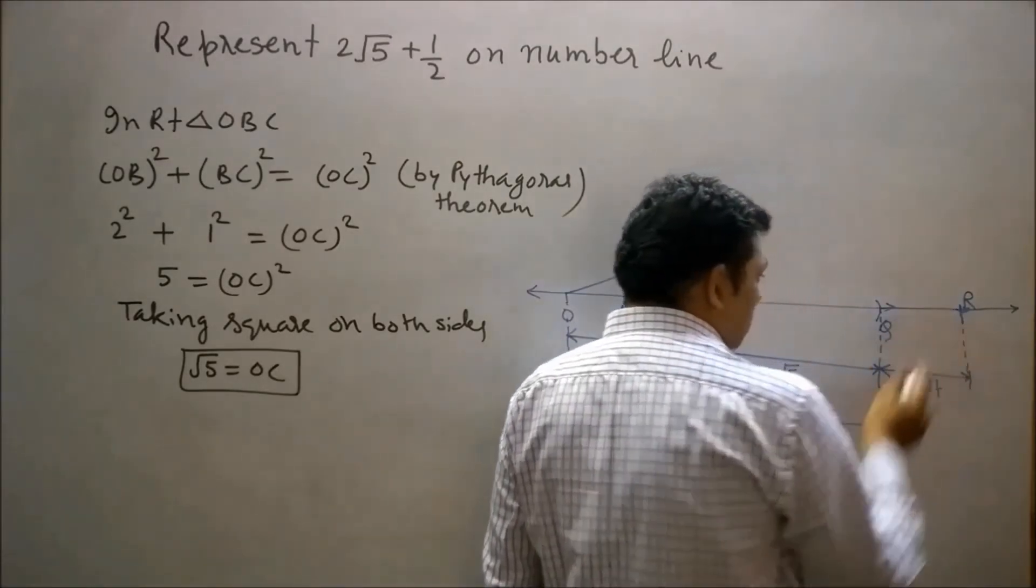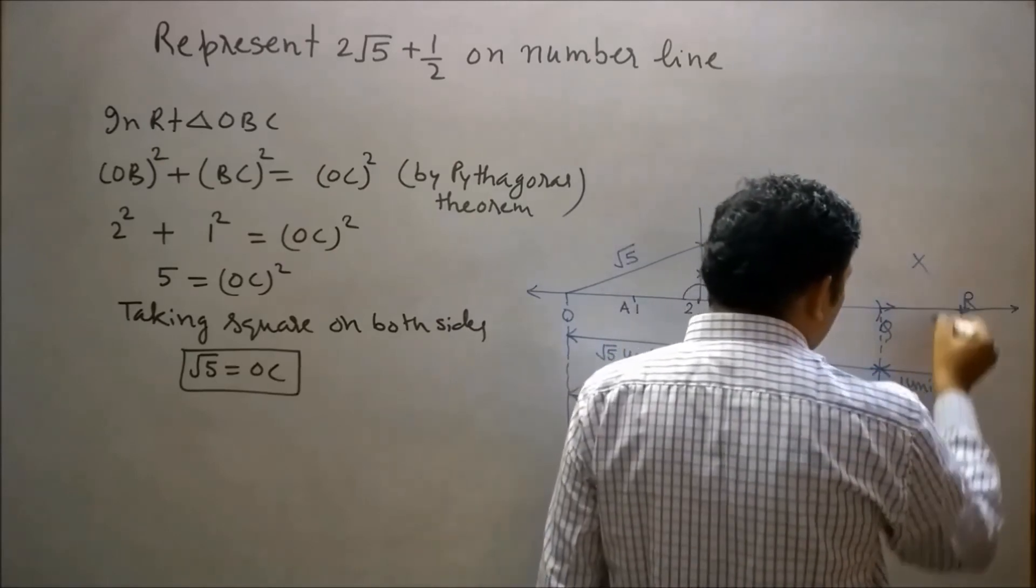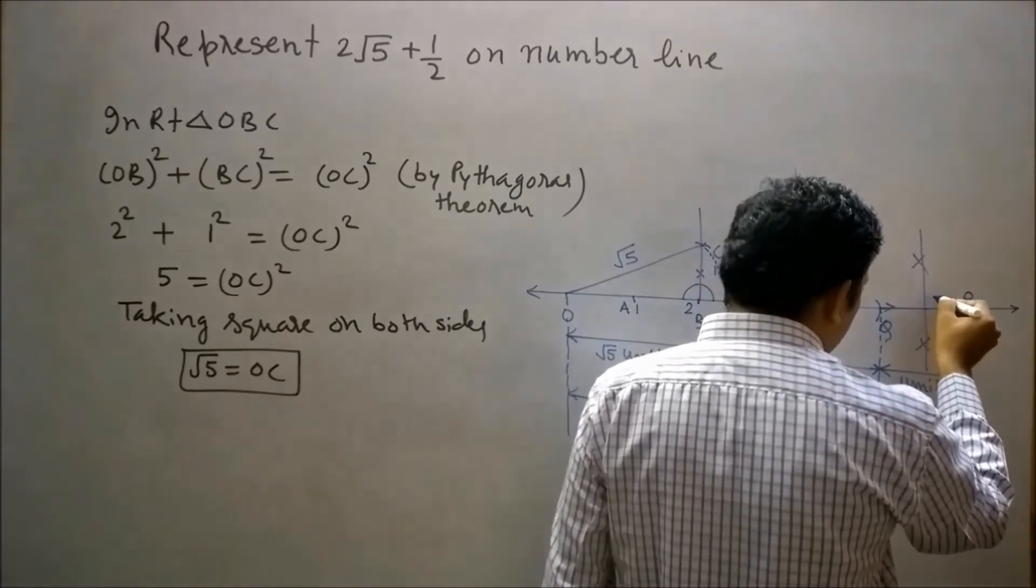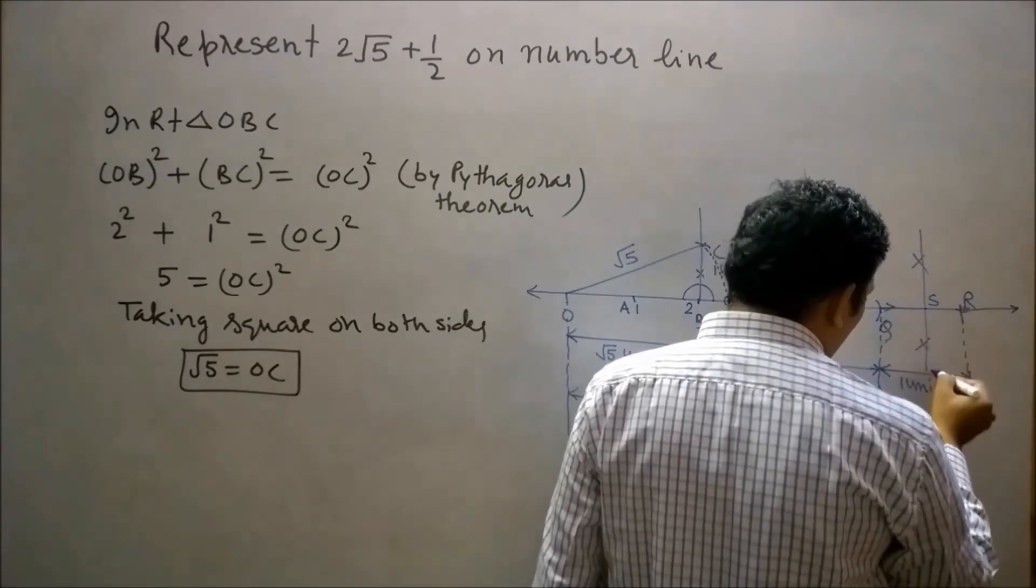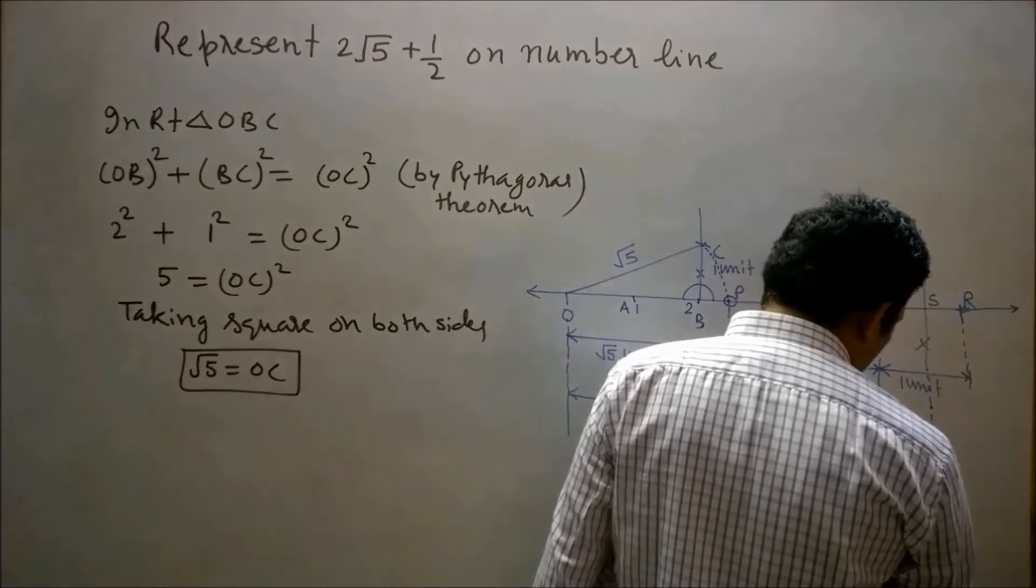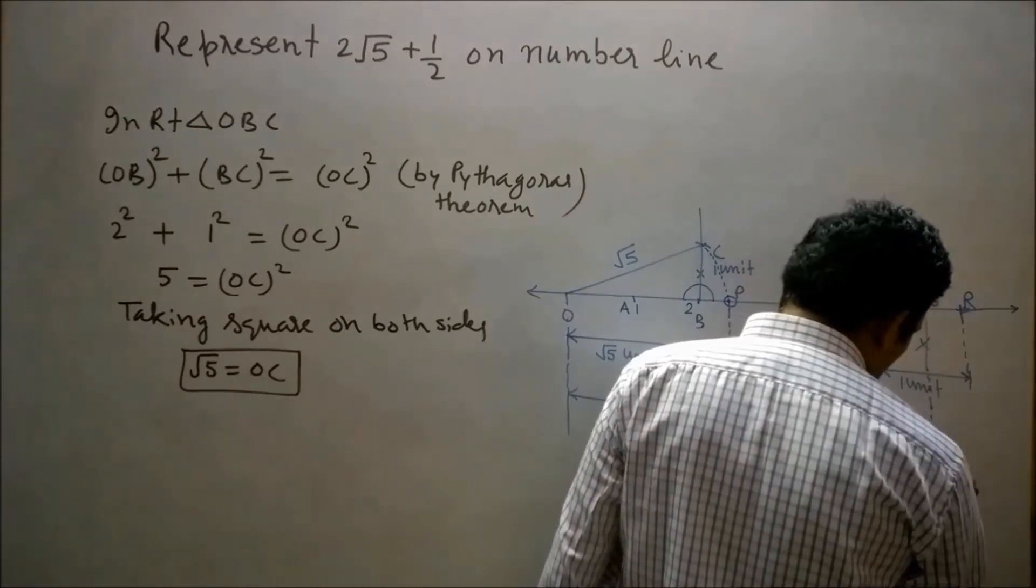Now draw a perpendicular bisector of QR. Let's say this point is S. Therefore, QS will equal to 1/2.